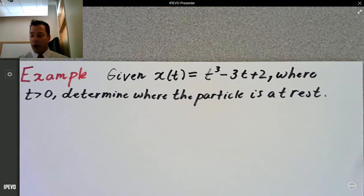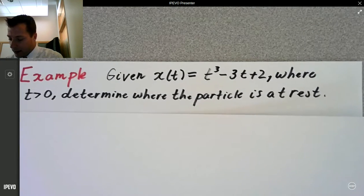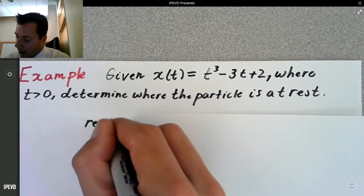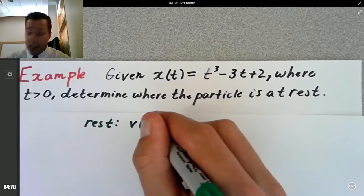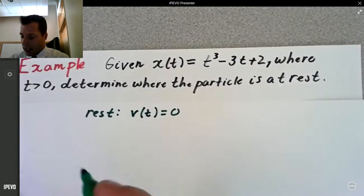The particle's at rest when v of t, that is velocity, is equal to 0. So let's look.